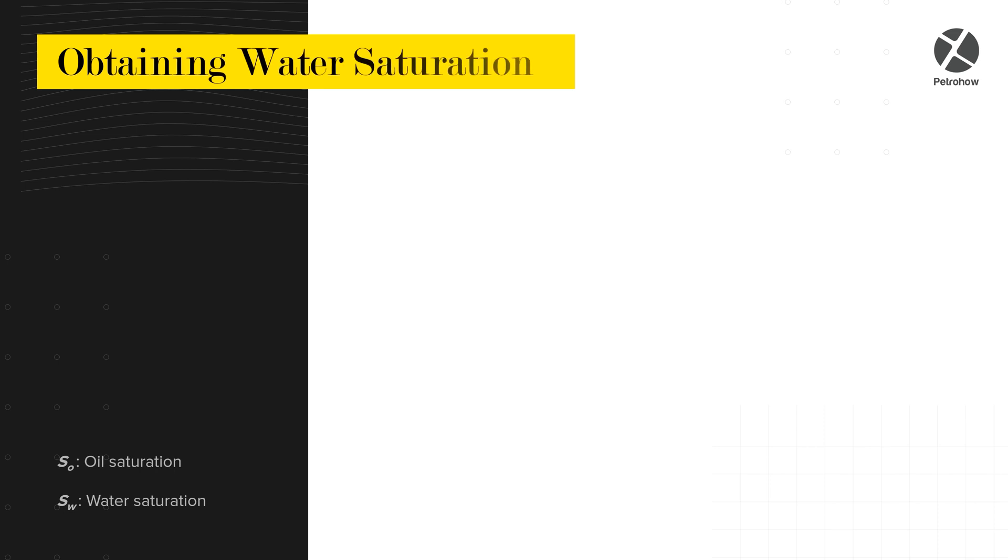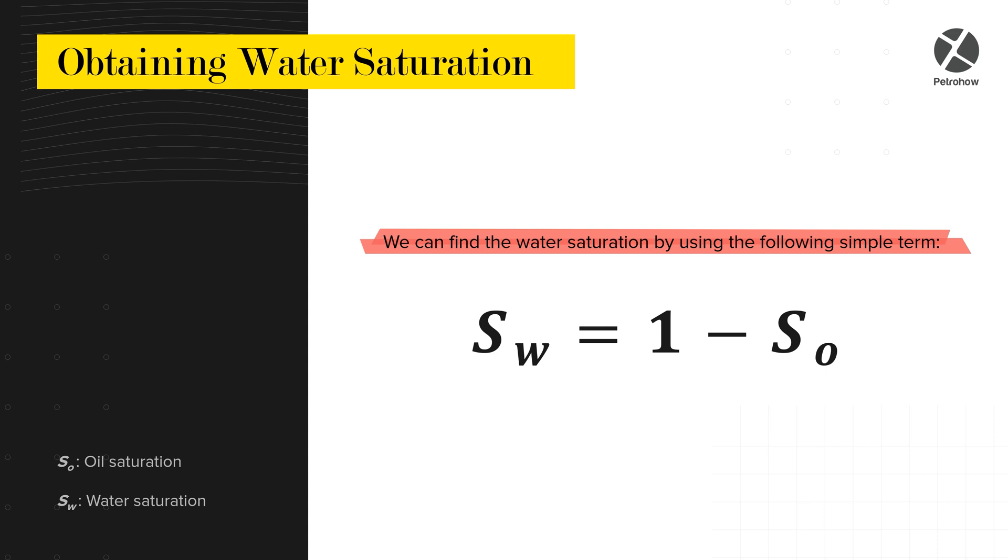We can now find the water saturation by using the following simple term, SW equals 1 minus SO.